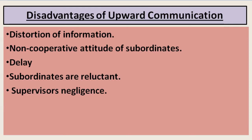The last disadvantage is supervisor's negligence. As we have seen, many disadvantages of upward communication are related to subordinates — their reluctancy and non-cooperative attitude. But another major reason might be supervisor's negligence. When supervisors neglect the messages coming from subordinates, the upward communication process fails, and this counts as a significant disadvantage.